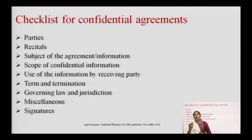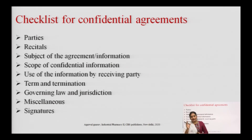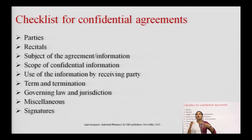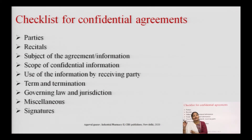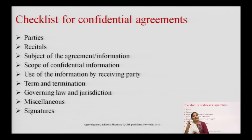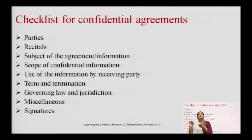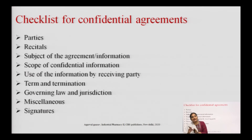For example, in a simple property purchase, the allotment letter requires the signature of the builder as well as the borrower. If there are two or three applicants on the borrower side, the signatures of all applicants are compulsory. Only then is the confidential agreement applicable.